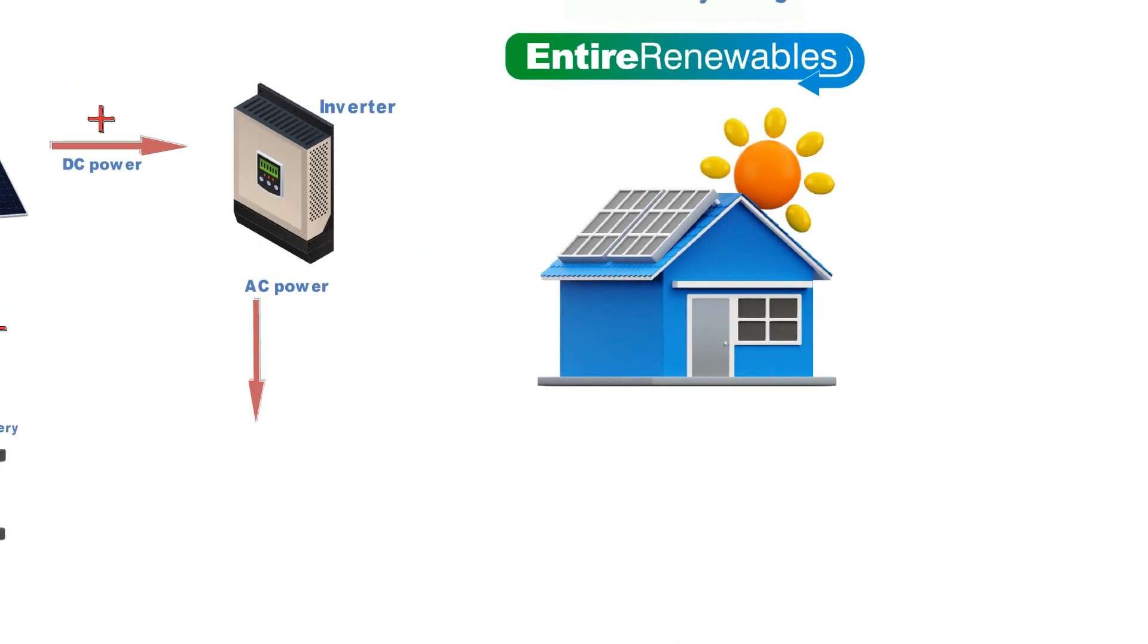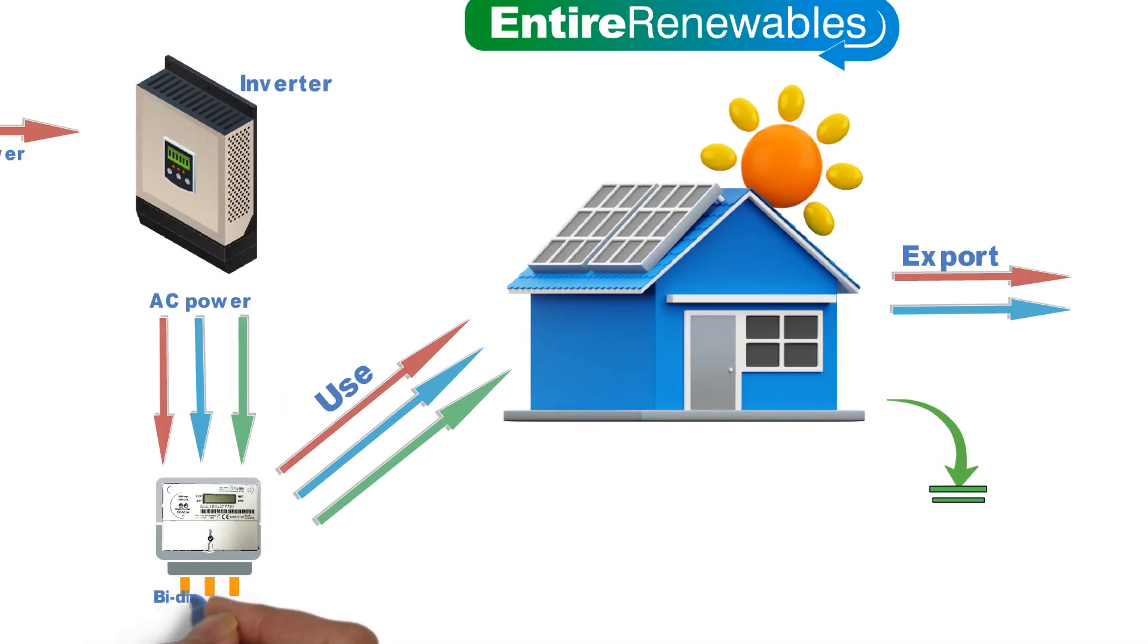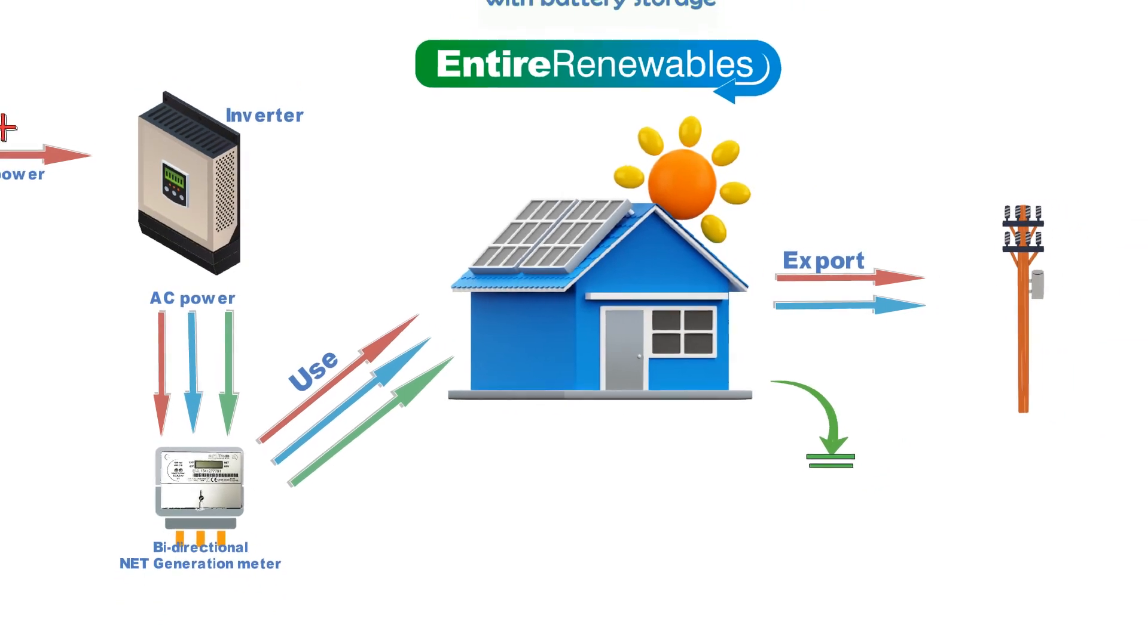This AC power can now be used in your home or be exported to the grid. Once it leaves the inverter the power will pass through a bi-directional net generation meter.